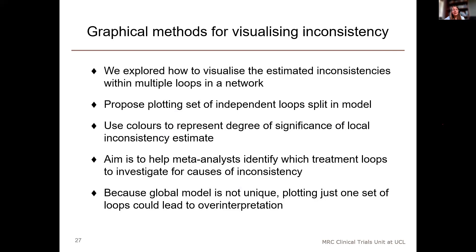We've explored how to visualize the results from fitting a global inconsistency model to help with interpretation. What we've proposed is plotting the set of independent loops split in the model, using colors to represent the degree of significance of each inconsistency estimate. The aim is to help meta-analysts identify which treatment loops might be worth investigating for causes of inconsistency. Because the global model isn't unique, plotting just one set of loops could lead to over-interpretation, so we'd suggest looking at multiple plots.